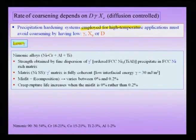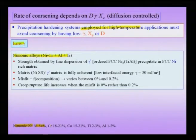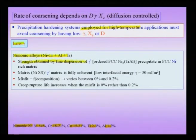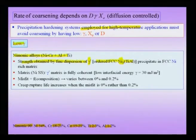For precipitation hardening systems used at high temperature, these conditions must be satisfied. Nickel superalloys are designed for high temperatures; a typical superalloy composition contains about 54% nickel, 18–20% chromium, 15–20% cobalt, and small percentages of titanium and aluminum. The basis of strength is a fine dispersion of γ' precipitates — an ordered FCC Ni₃(Ti,Al) structure with two sublattices, one occupied by nickel and one by titanium or aluminum.